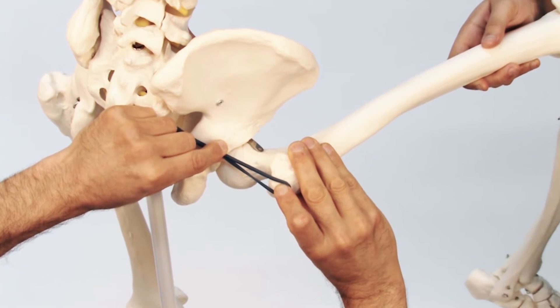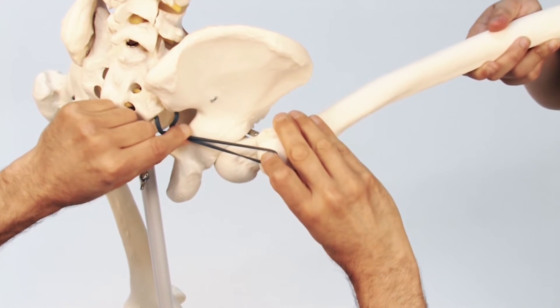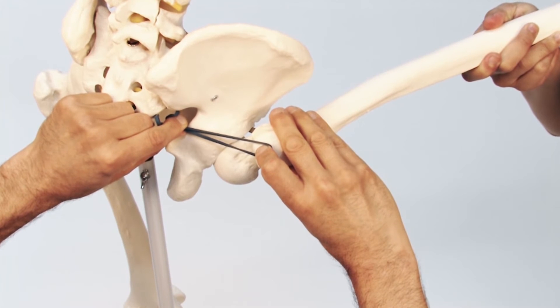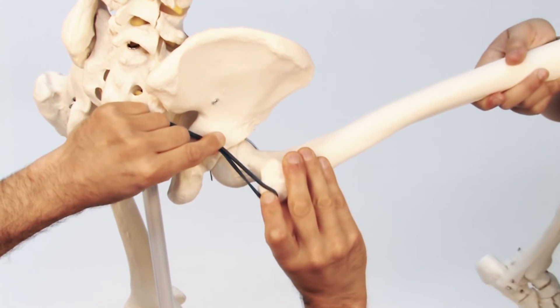Now if the femoral attachment is pulled toward the sacral attachment, the piriformis changes its action to be a medial rotator of the thigh at the hip joint.